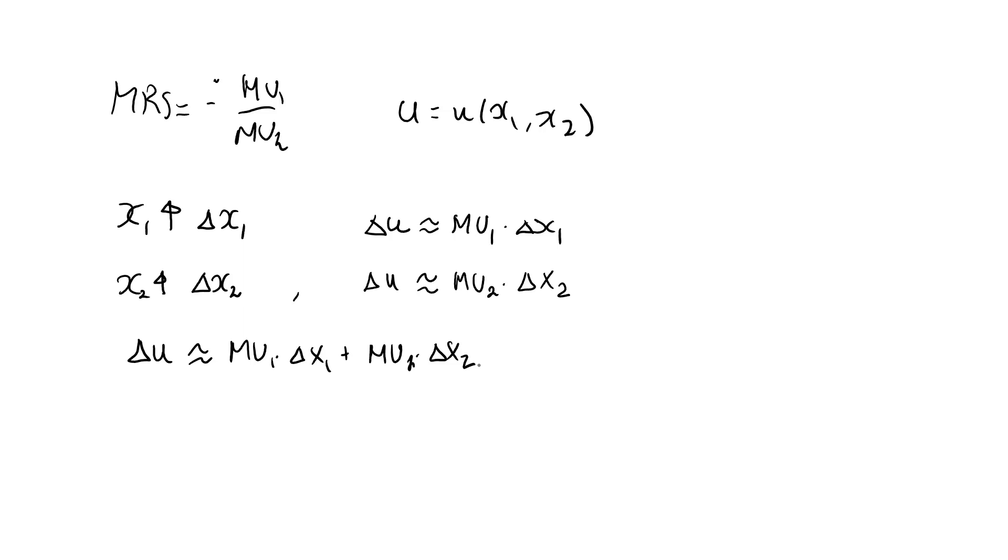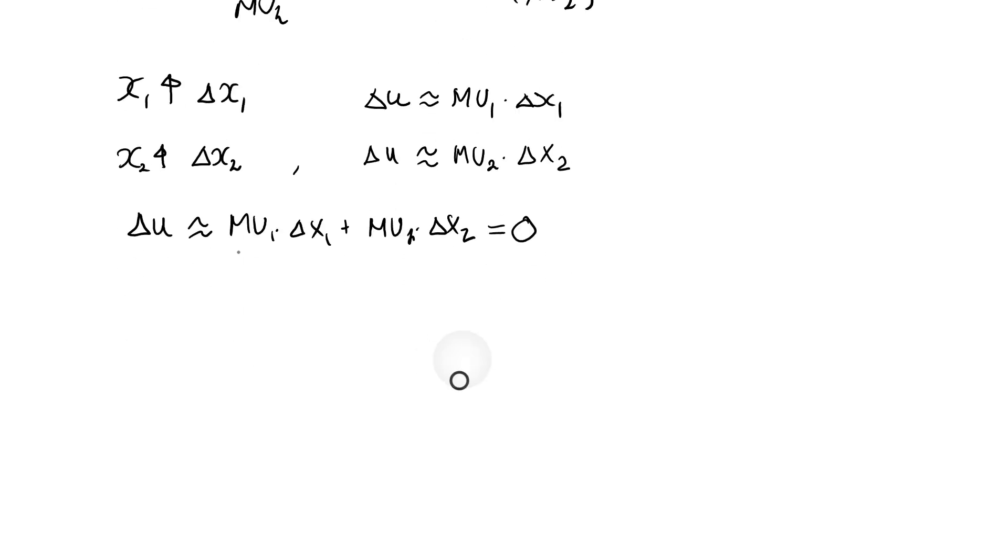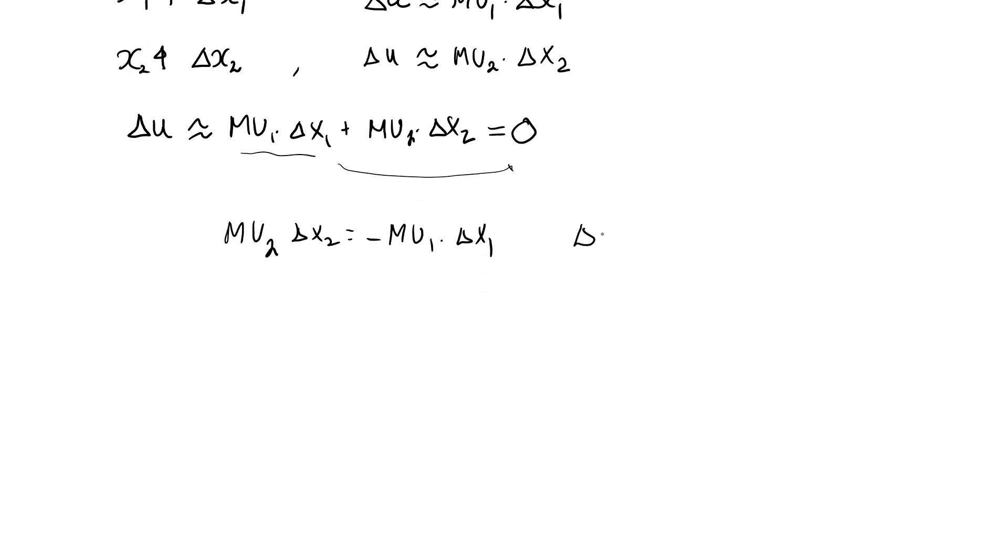That means that remaining on the indifference curve will restrict this expression to be equal to zero. No change in utility. Now, let's take this expression and move this part over to this side. Then we have mu2 delta x2 is equal to minus mu1 times delta x1. Let's divide both sides by mu2.